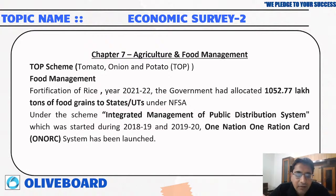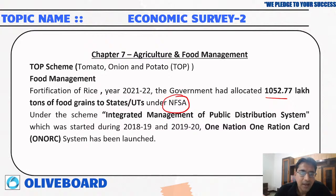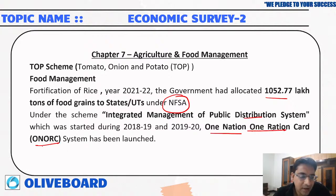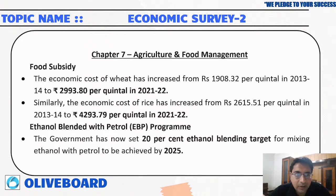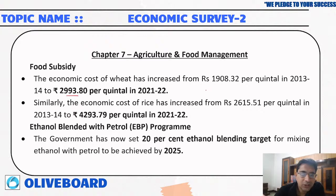Under the rice fortification initiative for 2021-22, the government allocated rupees 1,052 lakh tons of food grain to states under the National Food Security Act. Under One Nation One Ration Card, ONORC, an integrated management of public distribution system has been launched. The economic cost of wheat has increased from rupees 1,908 per quintal to rupees 2,993 per quintal. The economic cost of rice has risen to rupees 4,293 per quintal.